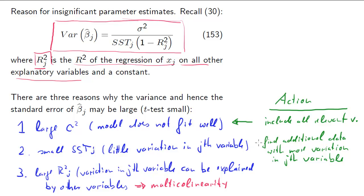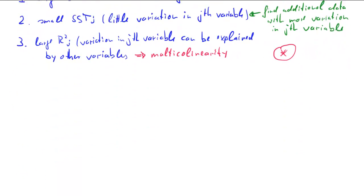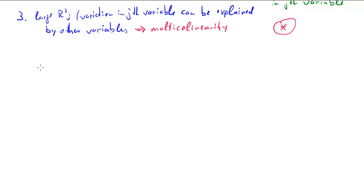So now we've discussed what to do if we have large variances for reasons 1 and 2. What about for the third reason, the multicollinearity reason? We have variables that are highly, very strongly related to each other. In this case, there's basically two pieces of advice one could give.